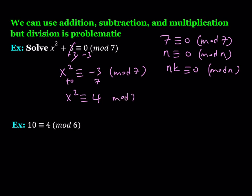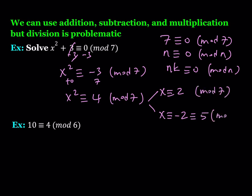Adding 7 to the right-hand side — since 7 is congruent to 0 — gives me x squared is congruent to 4 mod 7. This is nice because 4 is a perfect square, and from here I can branch off and say x is congruent to either 2 or negative 2 mod 7. Since negative 2 is congruent to 5 mod 7, this equation has 2 solutions: 2 and 5.